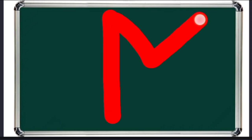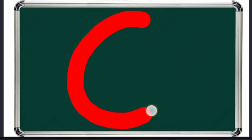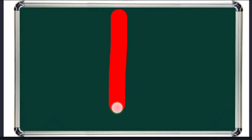L for lion. M for monkey. N for nest. O for ox. P for pirate.